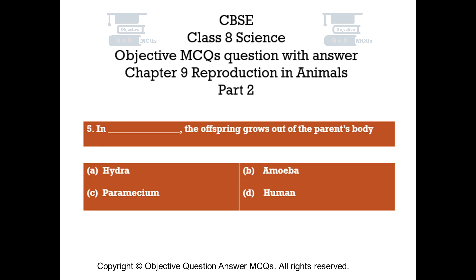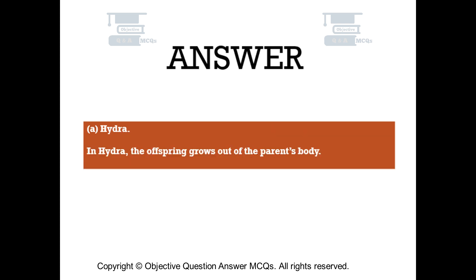Question number 5. In dash, the offspring grows out of the parent's body. Option A: Hydra. Option B: Amoeba. Option C: Paramecium. Option D: Human. The right answer is Option A: Hydra. In Hydra, the offspring grows out of the parent's body.